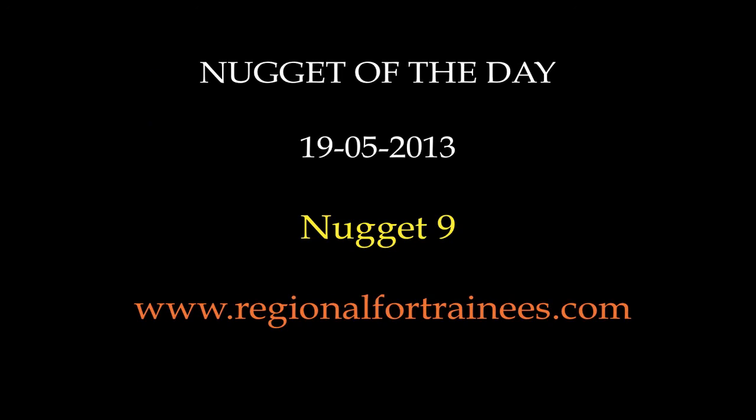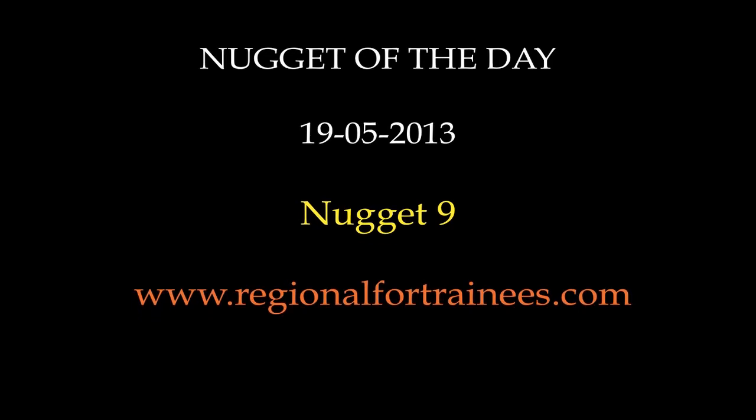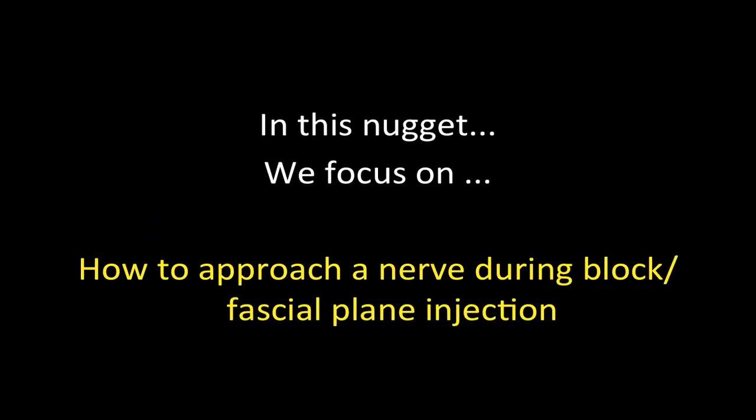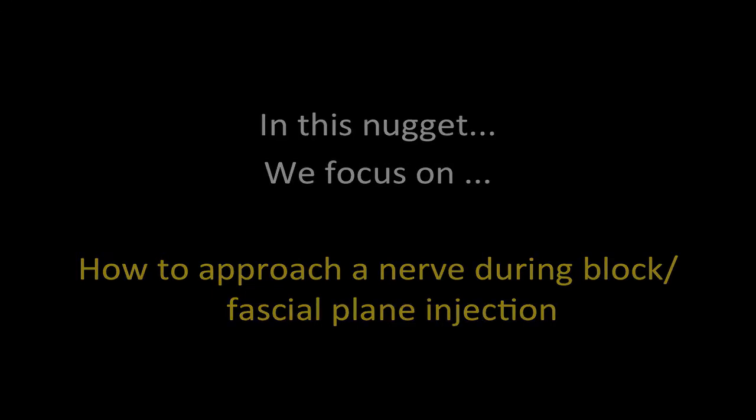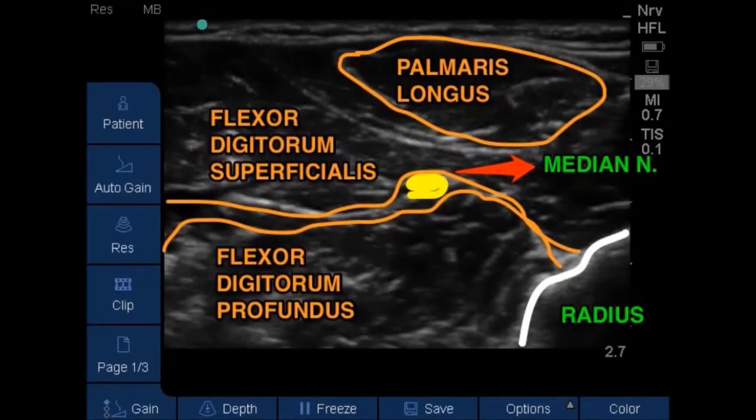Hello guys and welcome to another episode of nugget of the day. In today's nugget 9, we focus on how to approach a nerve during a nerve block or how to approach a fascia plane injection. Let's take the example of the median nerve.